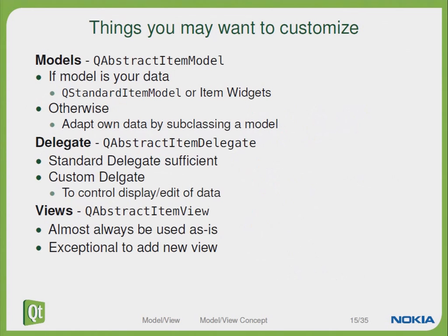Talking about things you may want to customize: if the model is your data, you can use the QStandardItemModel or the item-based widgets. Otherwise you will have to adapt your own data by subclassing a model. If you want to customize the delegate, which is derived from QAbstractItemDelegate, you can use a custom delegate to control the display and editing of your data. If you want to customize the views, which are derived from QAbstractItemView, you can do that, but this is a very rare case in normal applications. The normal approach is to use the views predefined in Qt.